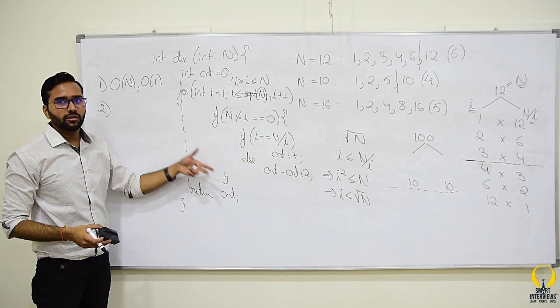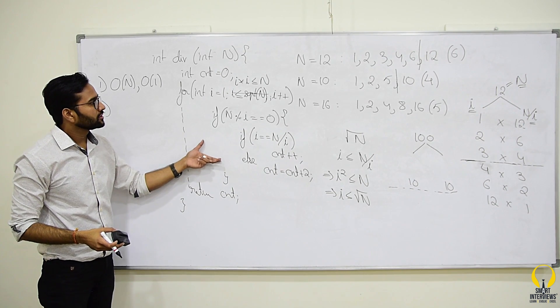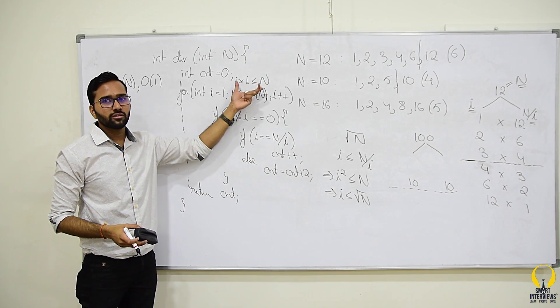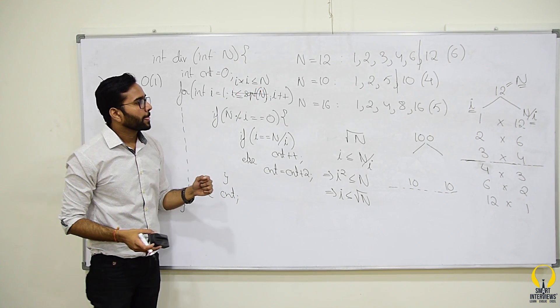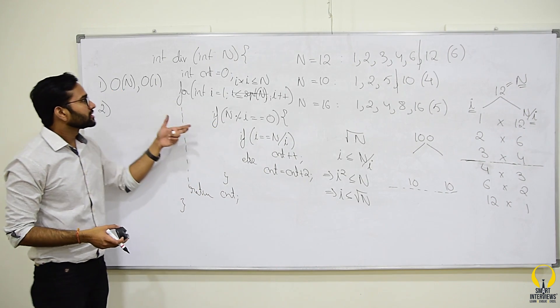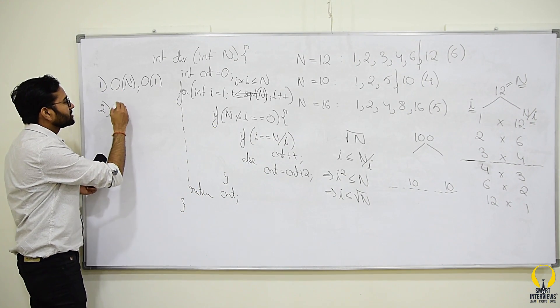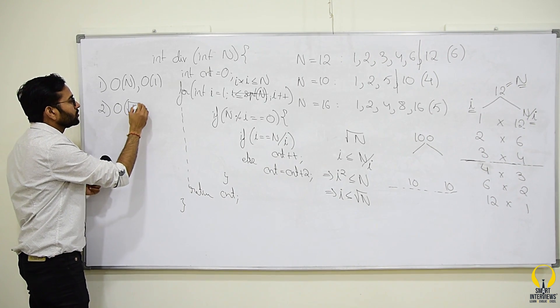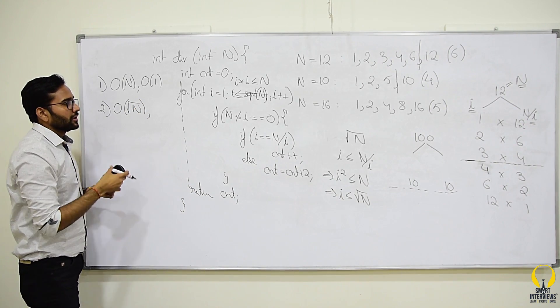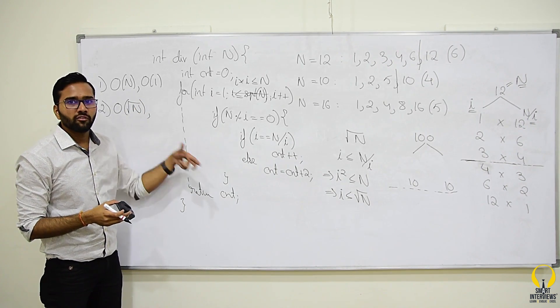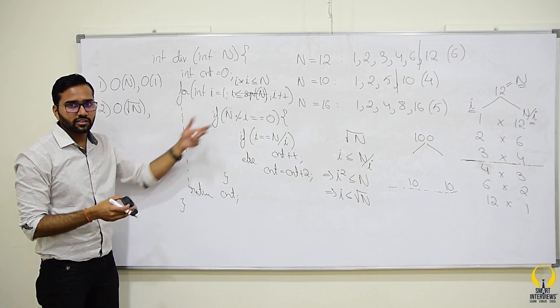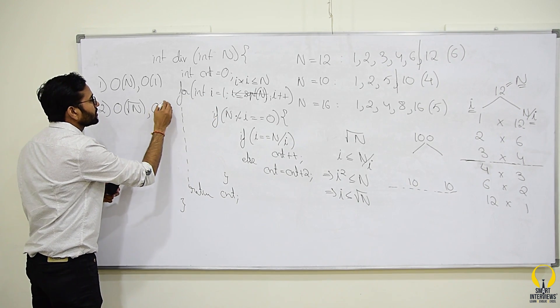Now, if I ask you the complexity of this solution, we are looping only for root n times. So, this gives us a better complexity than the brute force. Our new complexity is big O of root n and what about space complexity? We are not using any extra space. So, space complexity is big O of 1.